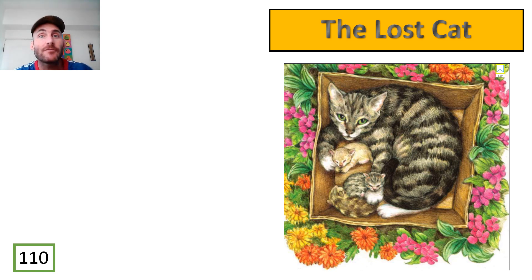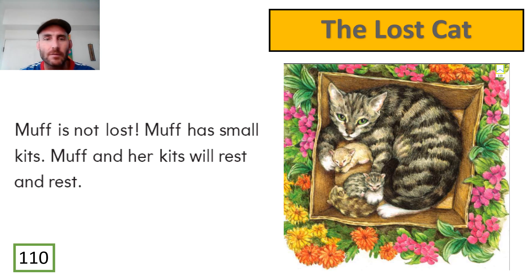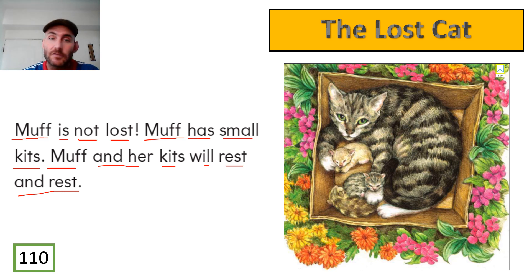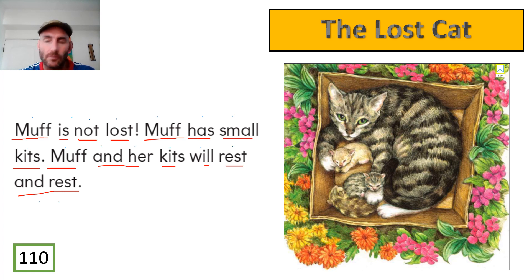Page 110 looks wonderful. We can see Muff and we can see Muff's new babies. Let's read — you start and then we will follow with Mr. Pan. Beautiful! Muff has kittens, and on this page we use the word 'kits' — K-I-T-S — which also means kittens. Muff is not lost. Muff has small kits. Muff and her kits will rest and rest. Everybody loves cats, and everybody likes baby cats — we call those kittens or kits.